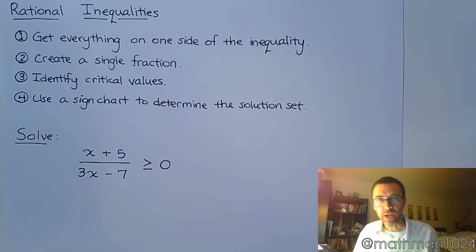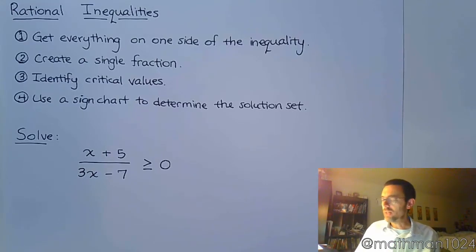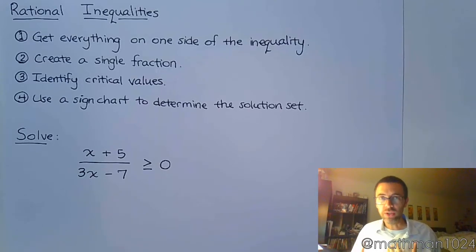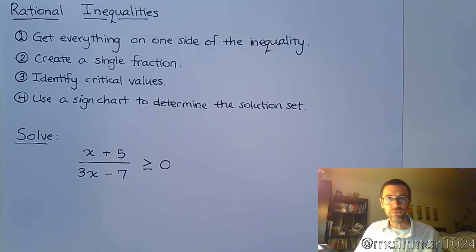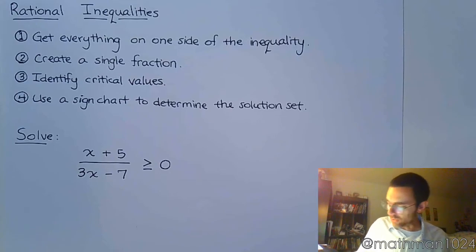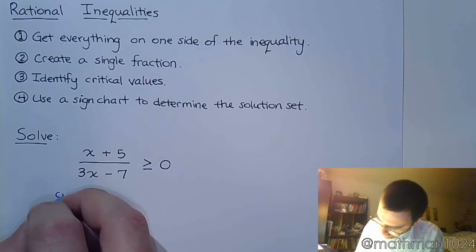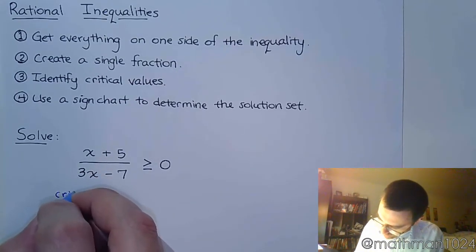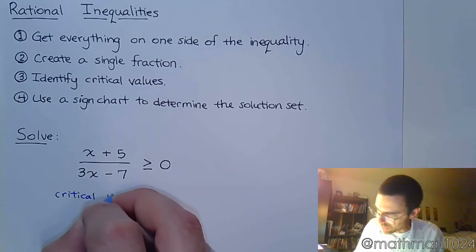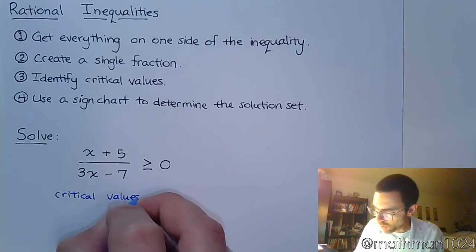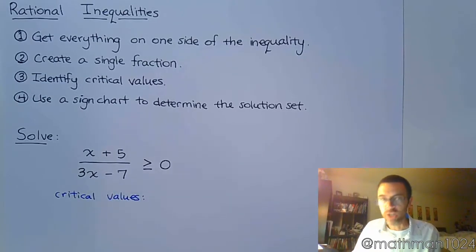So let's take a look at this example: (x + 5) / (3x − 7) ≥ 0. Everything's already on the same side of the inequality, and you already have a single fraction. We just need to identify those critical values — the values that make either the numerator or denominator equal to zero.